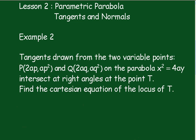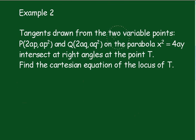Example 2: Tangents drawn from two variable points P, which is (ap, ap squared), and Q, which is (aq, aq squared), on the parabola x squared equals 4ay intersect at right angles at the point T. Find the Cartesian equation of the locus of T.